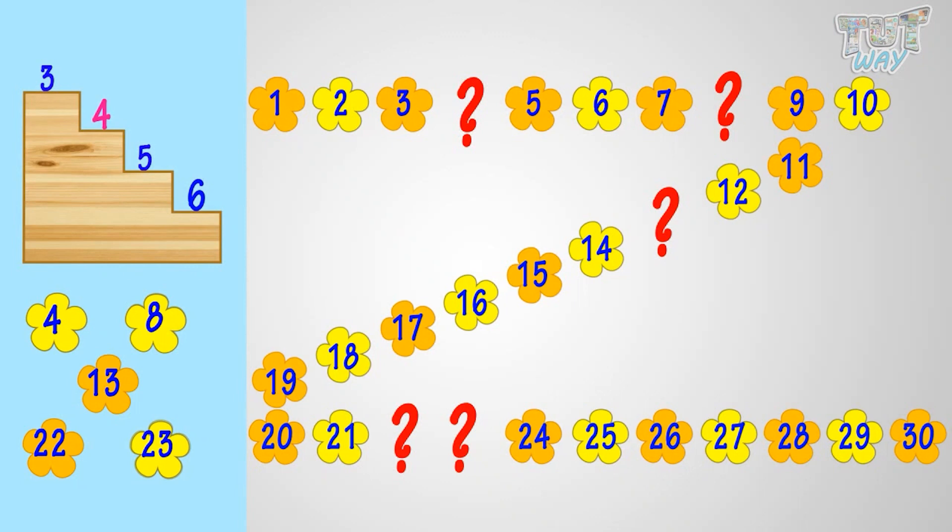For a number that comes before five, count backward. Five, four, three. Yeah! Four comes before five.